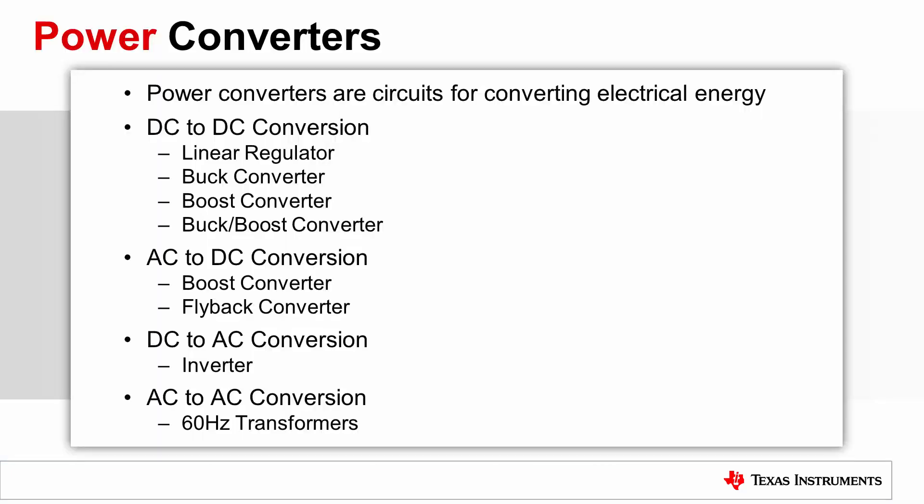Power converters are the vehicles for converting electrical energy. These circuits can be divided into four main categories: DC-to-DC conversion, AC-to-DC conversion, DC-to-AC conversion, and AC-to-AC conversion.